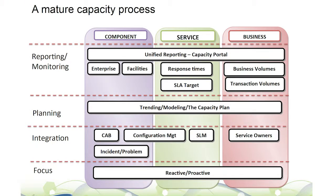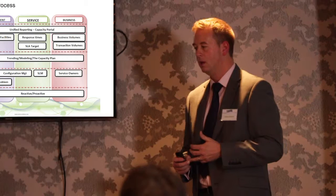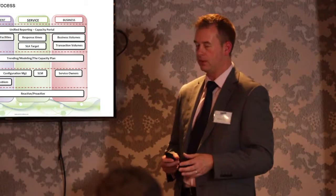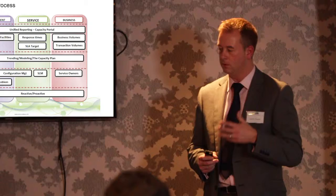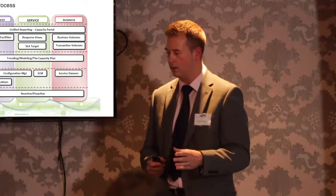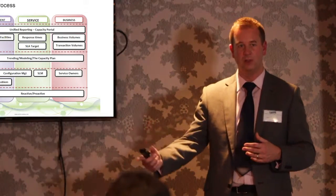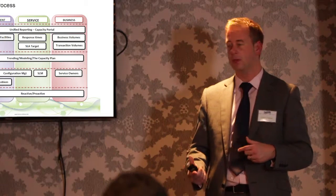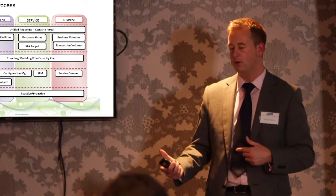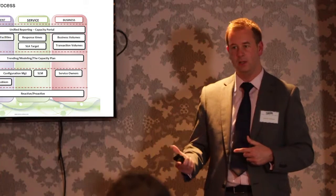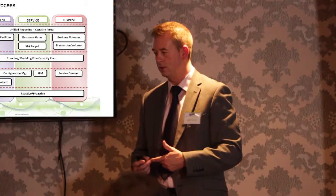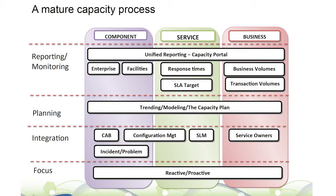Mature capacity process. There's always a reactive and a proactive focus on capacity management because things change and you have to react to dynamic situations. But it's the proactiveness of capacity management that's really key — how can we prevent outages or slowdowns by putting things in place, looking at what's happened in the past, forecasting into the future, and incorporating business information to make those decisions?